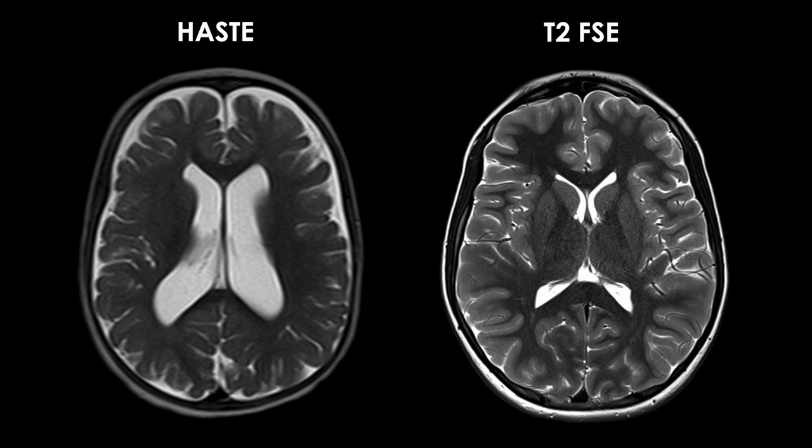The fast spin echo is much more sharp looking, and there's better contrast between the tissues. But in order to acquire it, the patient has to be able to lay quietly in the scanner for a much longer time than the haste sequence.